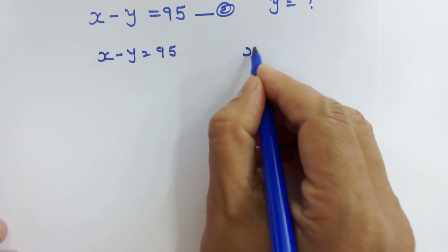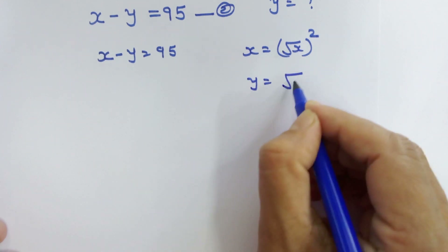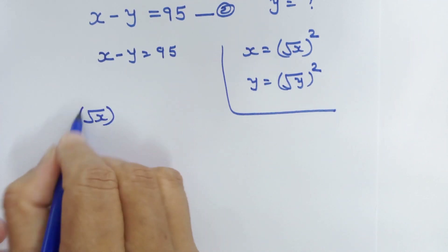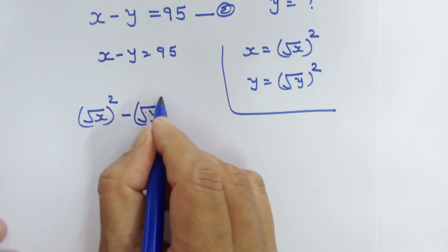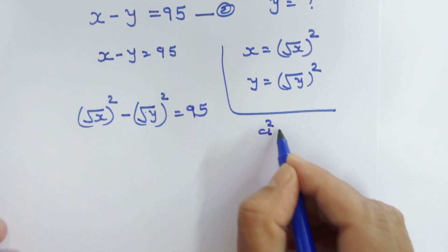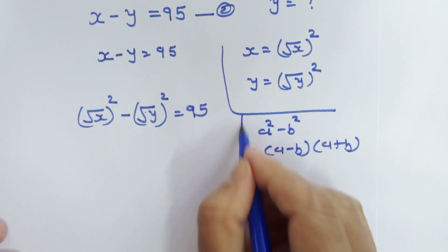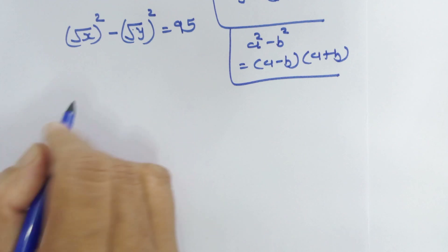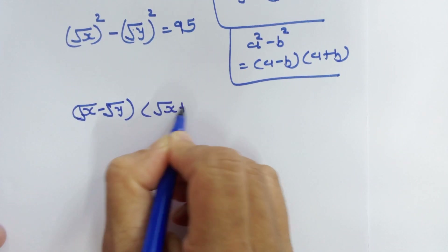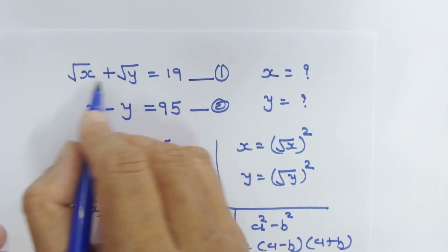We will start with equation number 2: x minus y is equal to 95. Now, x is equal to under root of x squared, and y is equal to under root of y squared. So we can write: under root x squared minus under root y squared equals 95. We have an identical situation like a squared minus b squared equals (a minus b)(a plus b), so we can write: (√x minus √y) times (√x plus √y) equals 95.